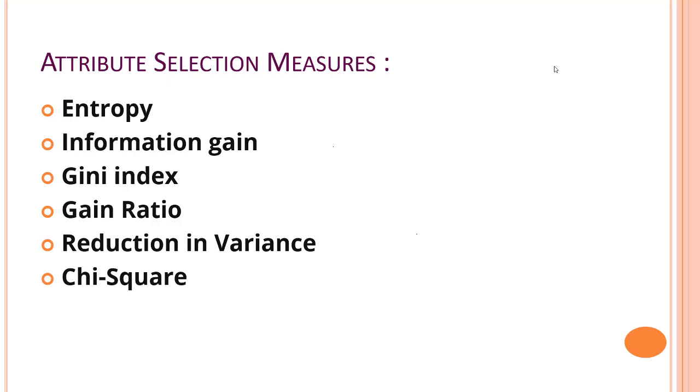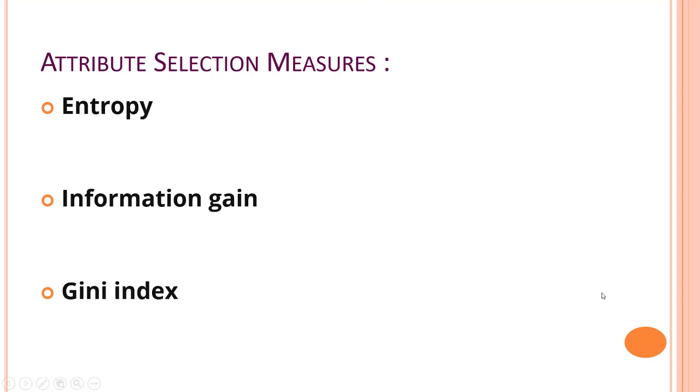These are the famous attribute selection measures we have: Entropy, Information Gain, Gini Index, Gain Ratio, Reduction in Variance, and Chi-Square. Out of these, we are going to discuss three of them - the three which are quite important for the CART algorithm (Classification and Regression Trees). We'll discuss the first three: Entropy, Information Gain, and Gini Index.